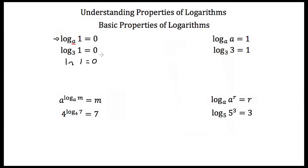This is because if we take log base 3 of 1 and that's equal to 0, and we write this as an exponential, this comes out to be 3 to the 0 power is equal to 1. So regardless of what the base is, if you're ever taking the log of 1, the only answer is 0.